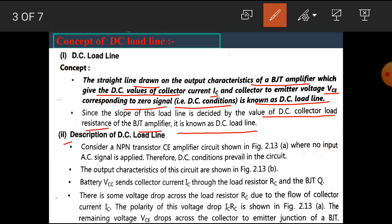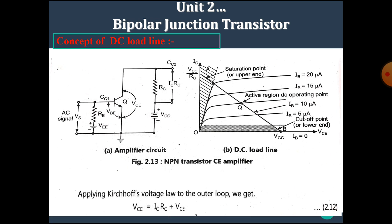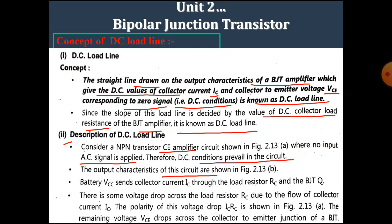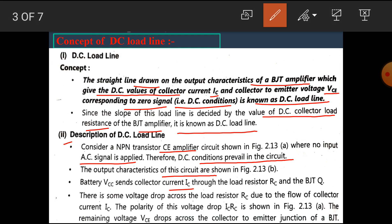Description of the DC load line: Consider an NPN transistor CE amplifier circuit where no input AC signal is applied. Therefore, DC conditions prevail in the circuit. The output characteristics of the circuit are shown here. The battery VCC sends a collector current IC through load resistance RC and the BJT Q. There is some voltage drop across the load resistance RC due to the flow of collector current IC. The polarity of this voltage drop ICRC is shown in the next figure. The remaining voltage VCE drops across the collector-to-emitter junction of the BJT.